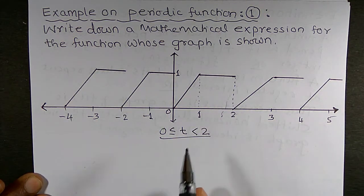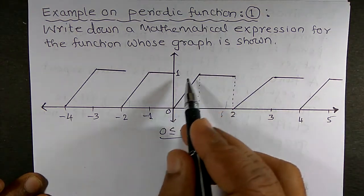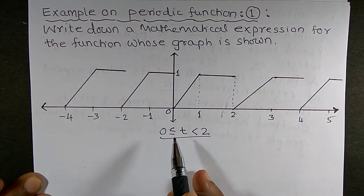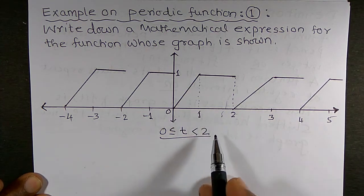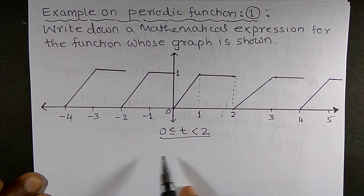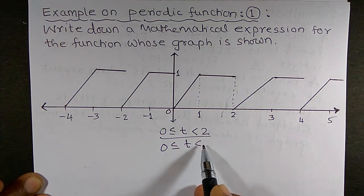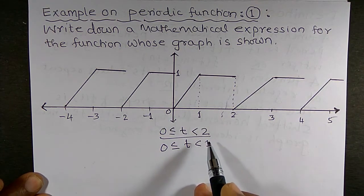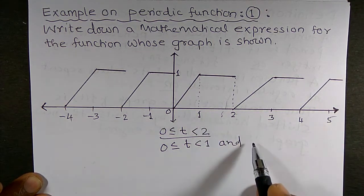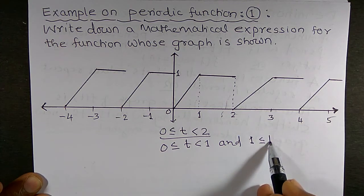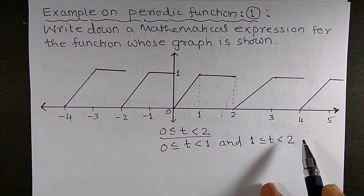Now I can write down those two intervals. To describe this function I need two intervals: one is 0 to 1, written as 0 ≤ t < 1, and the other interval is 1 to 2, written as 1 ≤ t < 2.